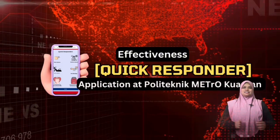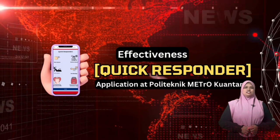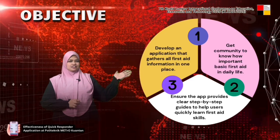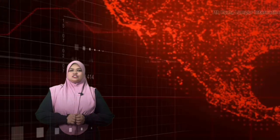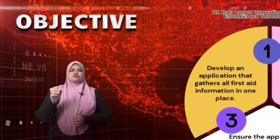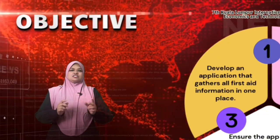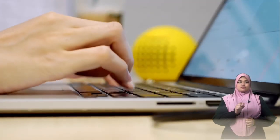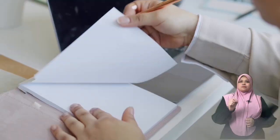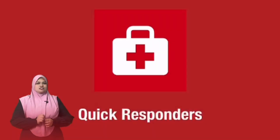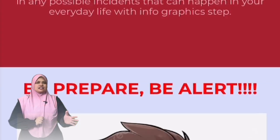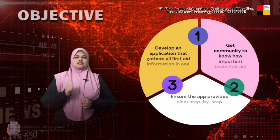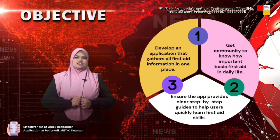What exactly do we aim to achieve with QuickResponder? Let's look at our objectives. The first objective is centralized first aid information. Many first aid resources are scattered across different websites, books and manuals. QuickResponder gathers all essential information in one place. The second objective is raising awareness in the community.